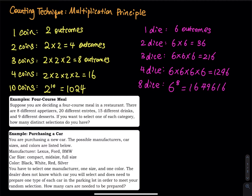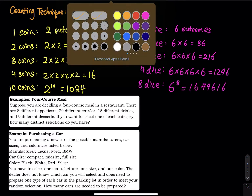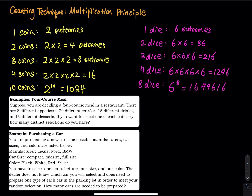What is the multiplication rule trying to say? Let's say you have multiple events that occur in sequence — say four events: event one, event two, event three, and event four. The first event has w outcomes, the second event has x outcomes, the third has y outcomes, and the last has z outcomes. The total outcomes in the sample space is w times x times y times z. Just like the coin and dice examples, we multiply everything together. That is called the multiplication principle.